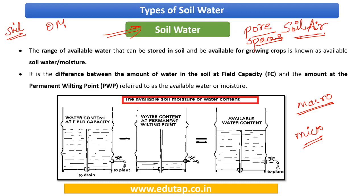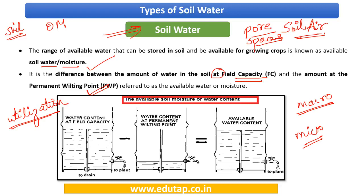When we refer to soil water or soil moisture, we are talking about the quantity of water that the plant can utilize — utilization is the key word. The available soil moisture is the difference between the amount of water in the soil at field capacity and the amount at the permanent wilting point.